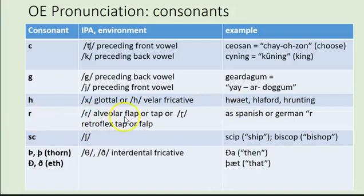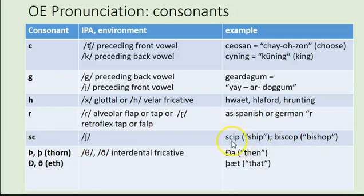R is an alveolar flap or tap — like the Spanish or German R. So we don't pronounce the Old English R like the English R; it's a tap. SC makes the sound SH, as in 'ship' or 'bishop.' This is consistent across Old English. In Middle English, SC becomes an S sound because French speakers took over writing English and already had that S sound for SC, so they invented the SH combination to transcribe the existing sound.